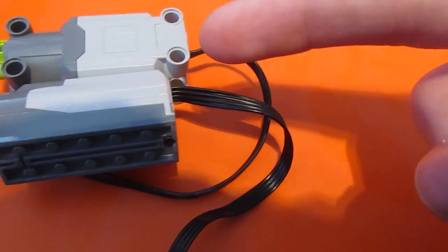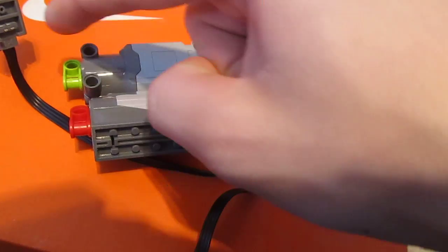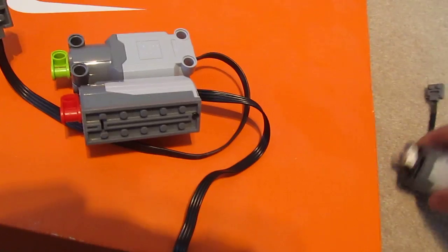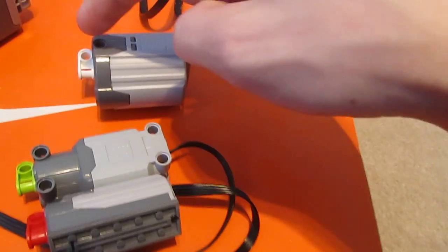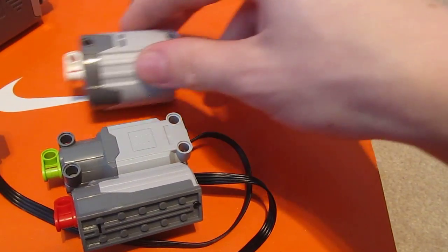Like I said, it's one stud longer. This motor is six studs long, this one is seven. The XL motor is six studs long.